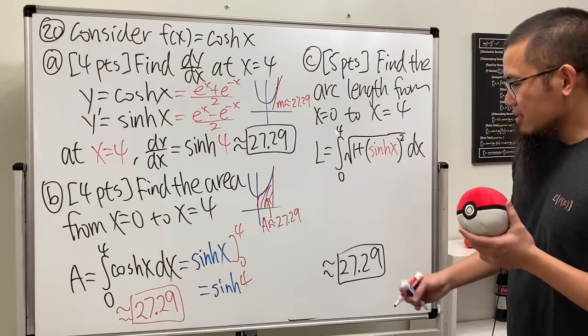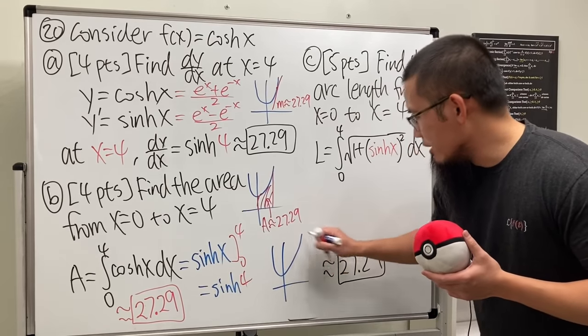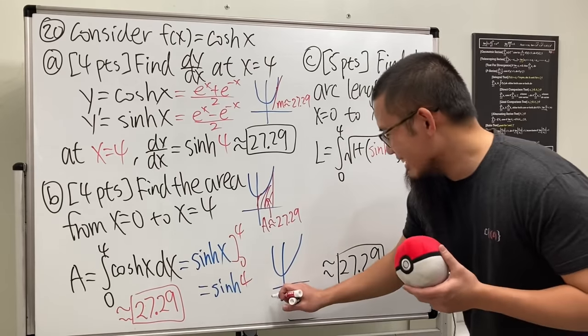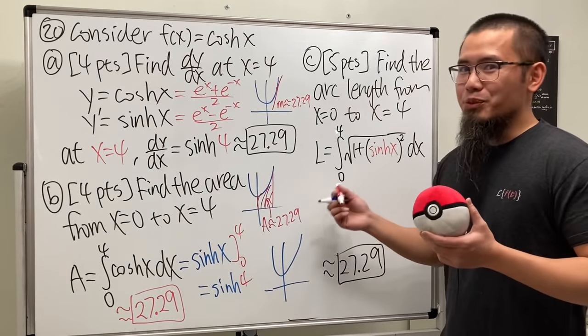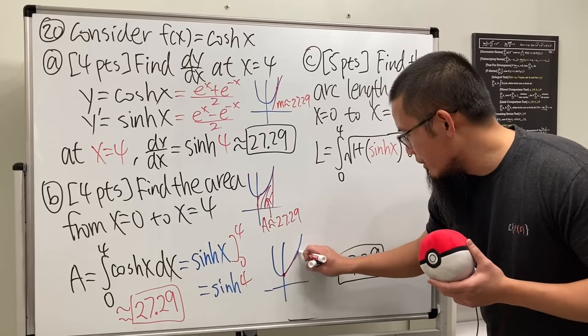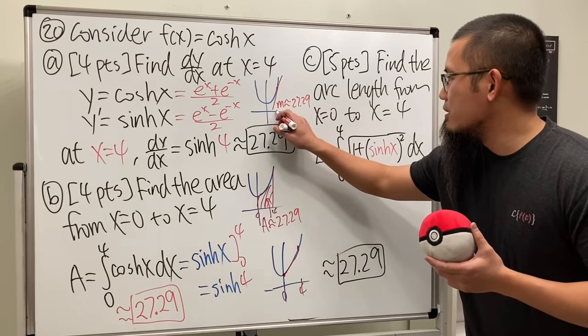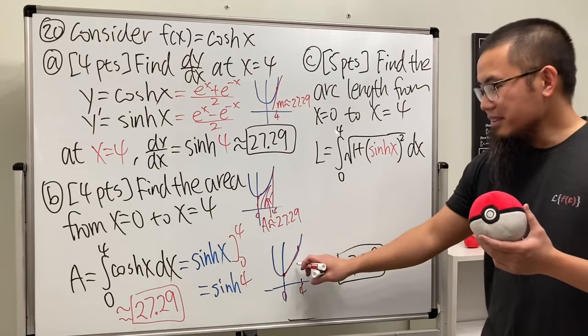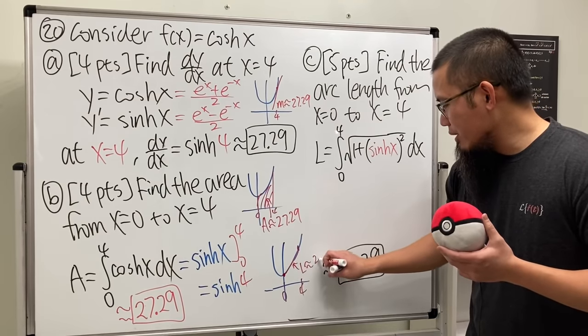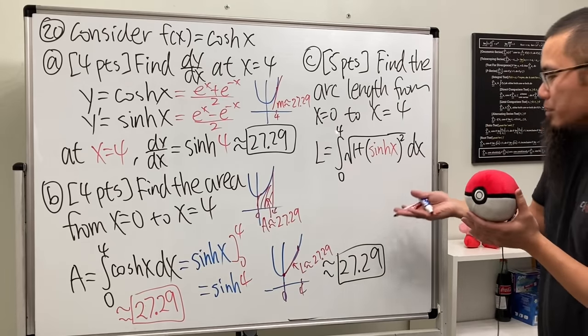Lastly, the arc length. The same picture, of course they all look different. This one is the arc length going from 0 to 4, meaning that we're looking at from here to here. This is 0 and this is 4. This arc length L is approximately 27.29, and now this is so mind-blowing. Like, how does this turn out to be that?